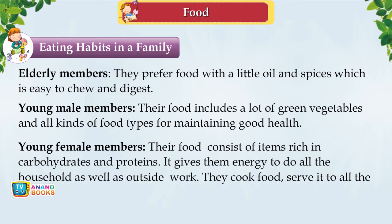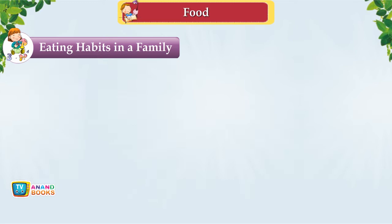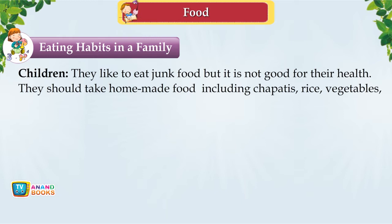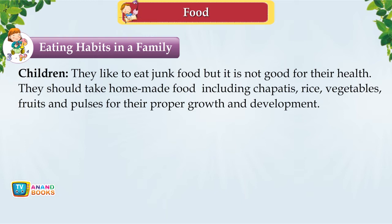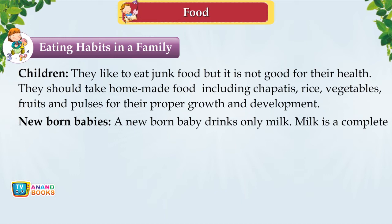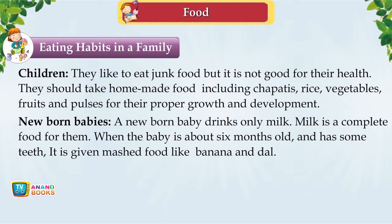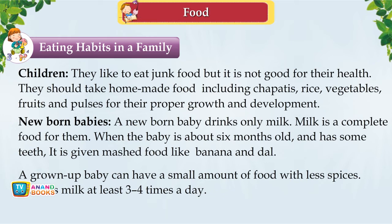Children like junk food, but it is not good for their health — they should take homemade food including chapatis, rice, vegetables, fruits and pulses for proper growth and development. A newborn baby drinks only milk, which is a complete food for them. When the baby is about 6 months old and has some teeth, it is given mashed food like banana and dal. A grown-up baby can have small amounts of food with less spices, and needs milk at least 3–4 times a day.